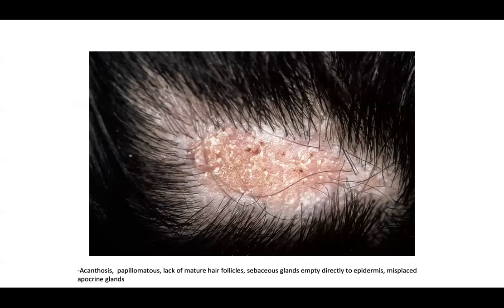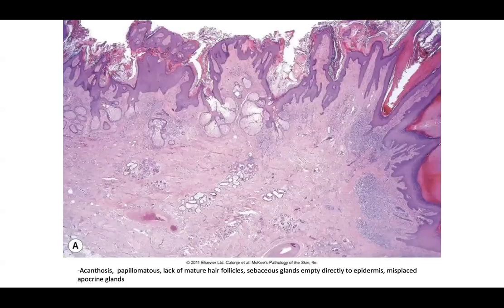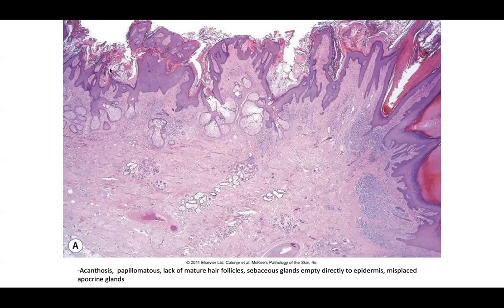Here you can see a nevus sebaceous. On the slide you'll see acanthosis and papillomatosis corresponding to that bumpy architecture on the outside. There's a lack of mature hair follicles, and sebaceous glands empty directly to the epidermis. That's an important point: when you see those sebaceous glands directly contacting the epidermis and not associated with a hair follicle, think about nevus sebaceous. Misplaced apocrine glands are also a feature. The clinical and histopathology line up really well — no hair follicles explains the alopecia.